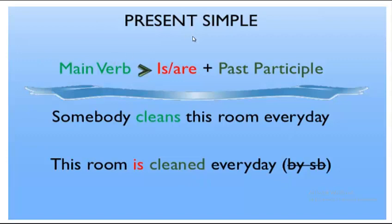Another example: 'Somebody cleans this room every day.' To change this to passive, we start with the object — 'this room.' 'This room' is singular, so we put 'is,' followed by the past participle of the verb. In present simple passive, we always start with the object, followed by 'is' or 'are,' then the past participle.